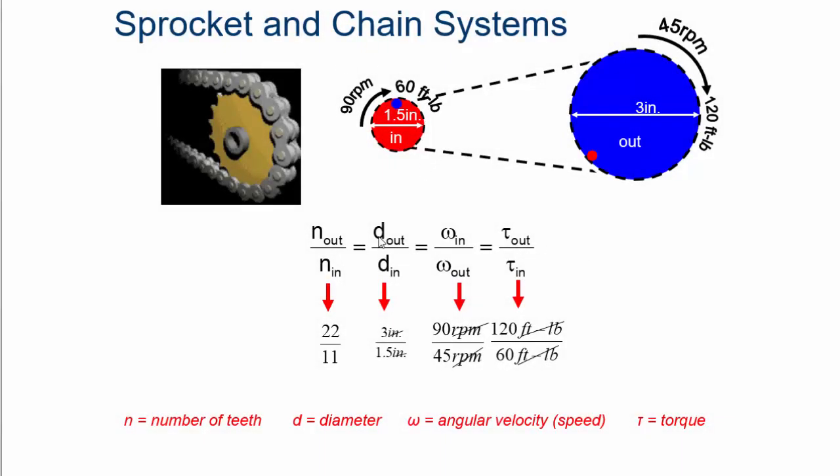Sprockets and chains, again, you can use number of teeth, diameter, angular velocity, and torque.